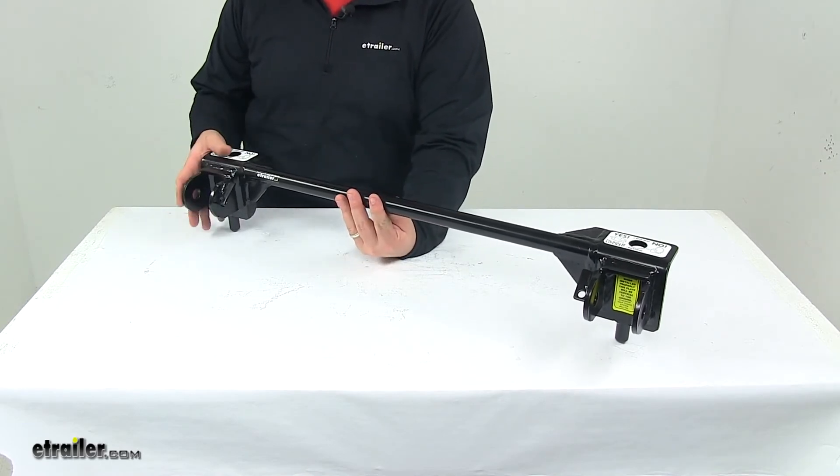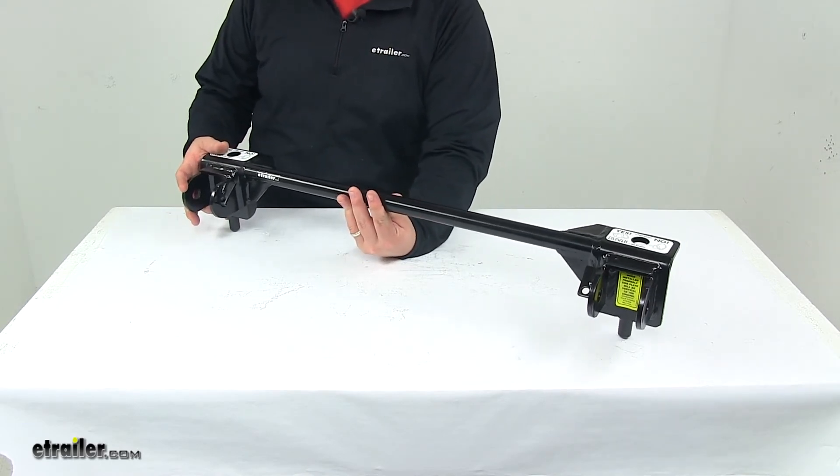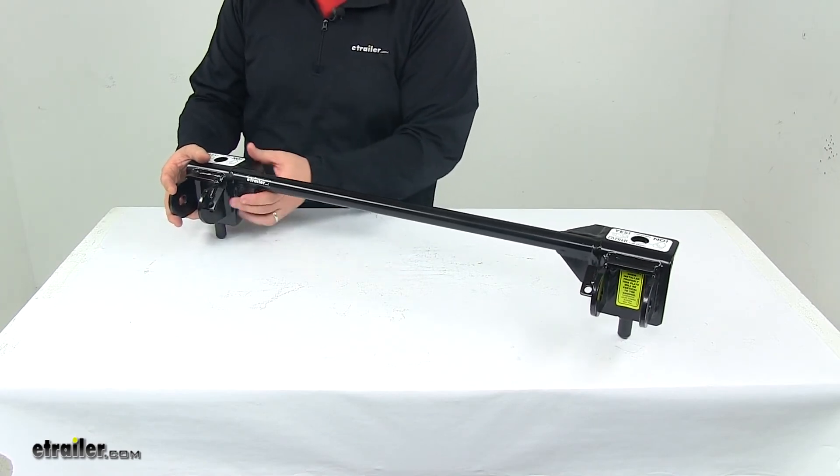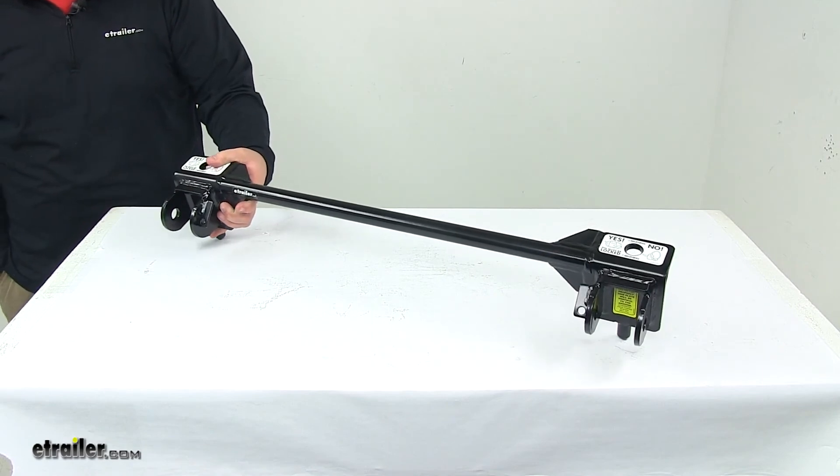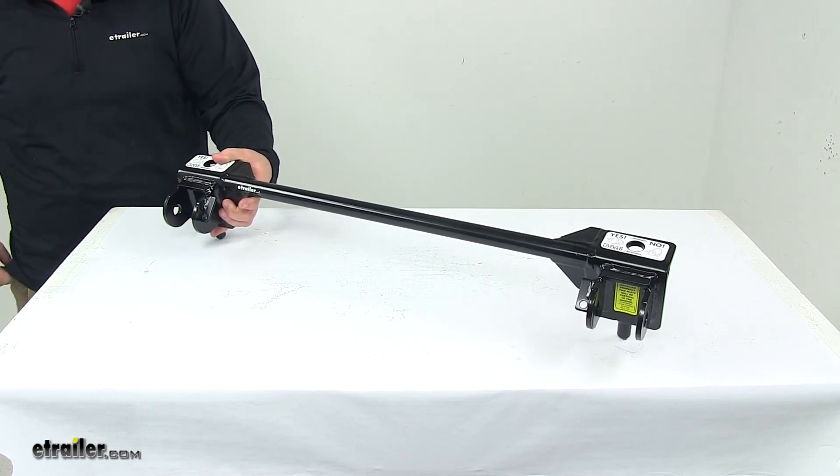Car side quick disconnect brackets are sold separately if needed. They can be found at eTrailer.com with part number RM-222. That's going to do it for today's look at the replacement crossbar for Roadmaster Motorhome mounted tow bars.